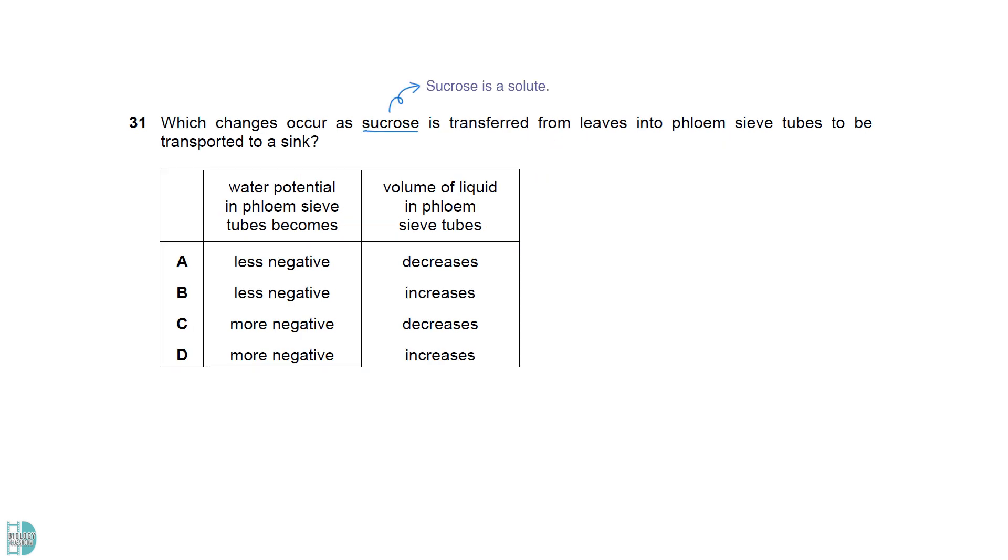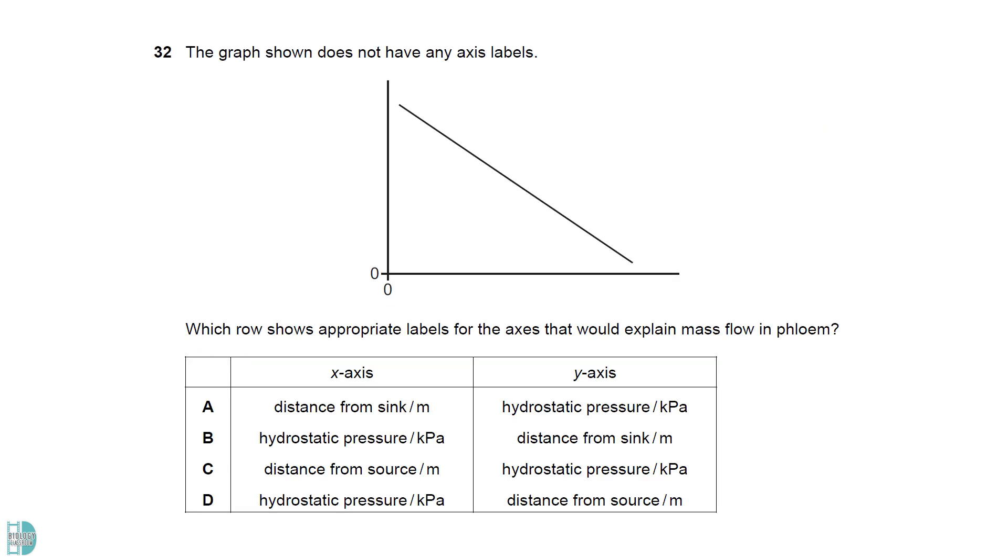Sucrose is a solute. When it enters the sieve tube element, it decreases the water potential. This causes water to enter by osmosis, down the water potential from the surrounding cells, leading to an increase in the volume of liquid in the sieve tube element. The hydrostatic pressure is high near the source and low near the sink. This pressure gradient causes the mass flow to occur.